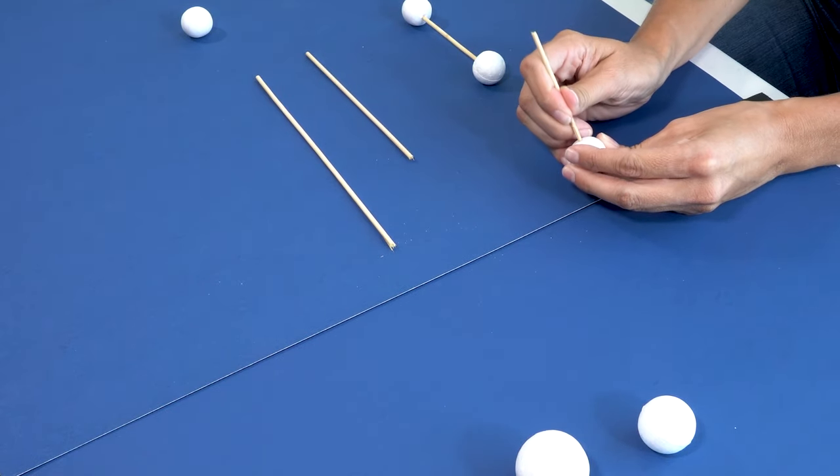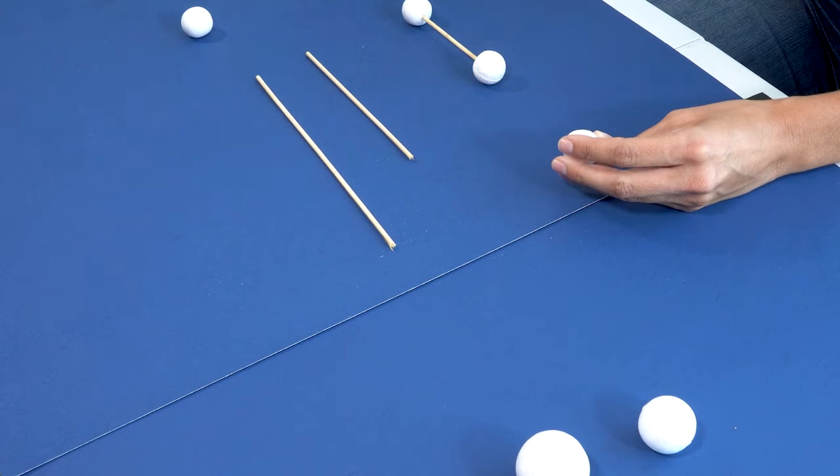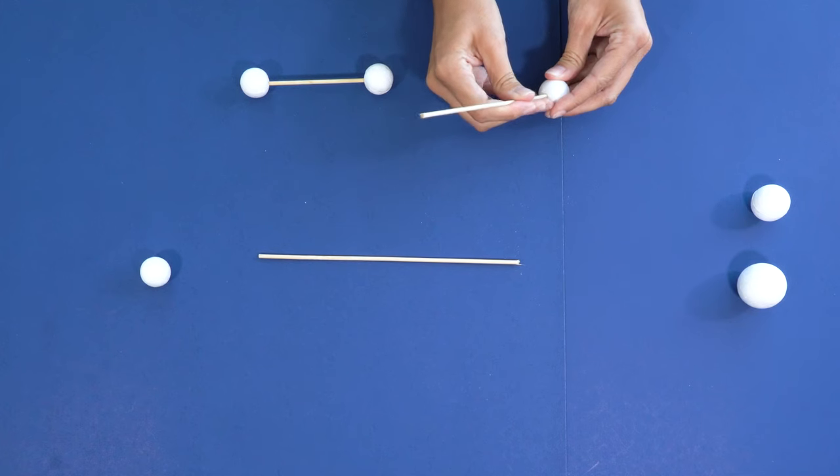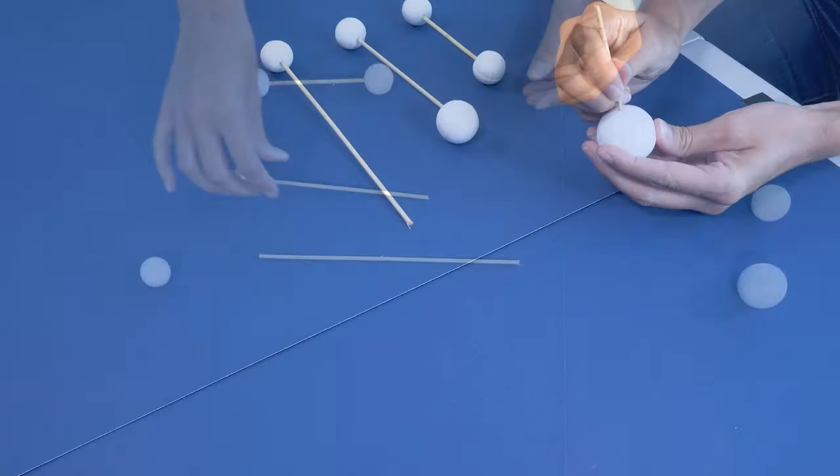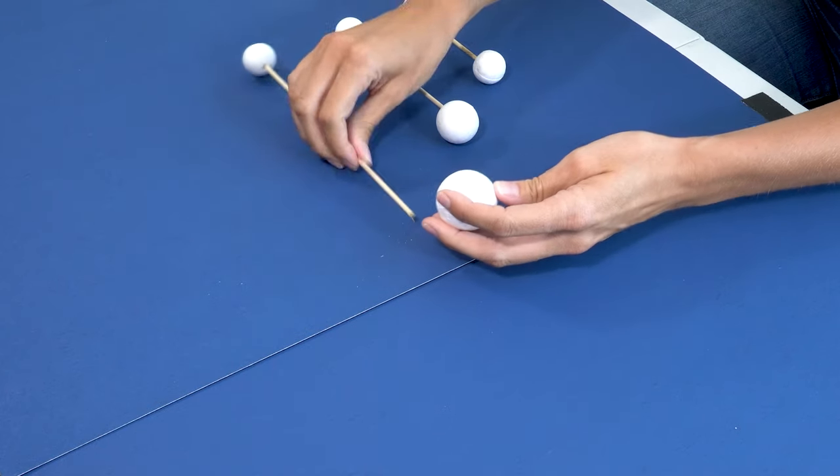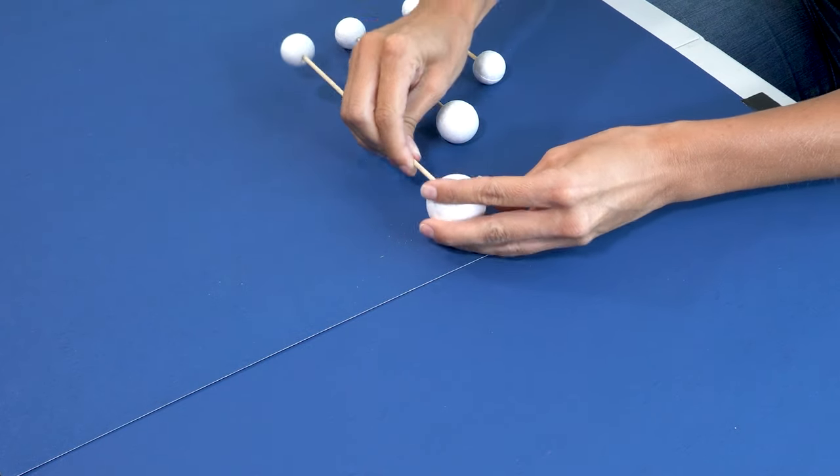The next step is going to be to attach the balls. It works best if you use the pointy end of the stick to pre-drill those holes. You'll want to do this for all of your styrofoam balls and all of your different tiers.